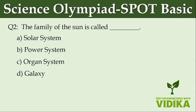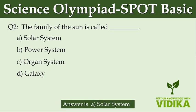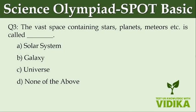Option D: Galaxy. The vast space containing stars, planets, meteors, etc. is called dash. Option A: Solar system. Option B: Galaxy. Option C: Universe. Option D: None of the above.